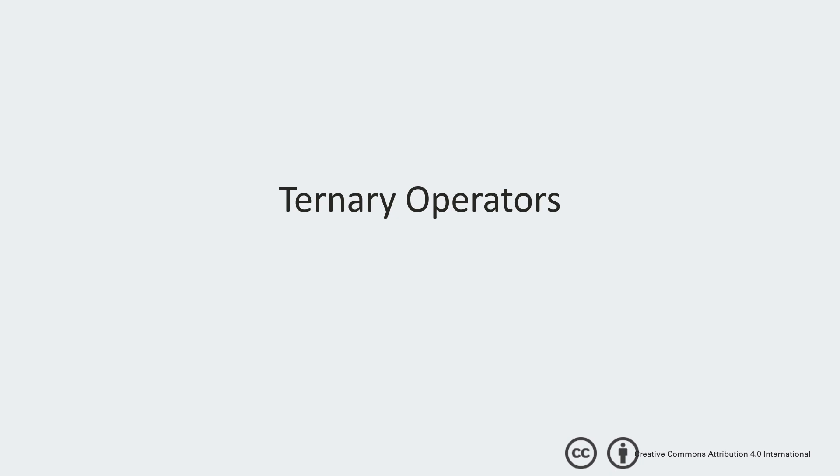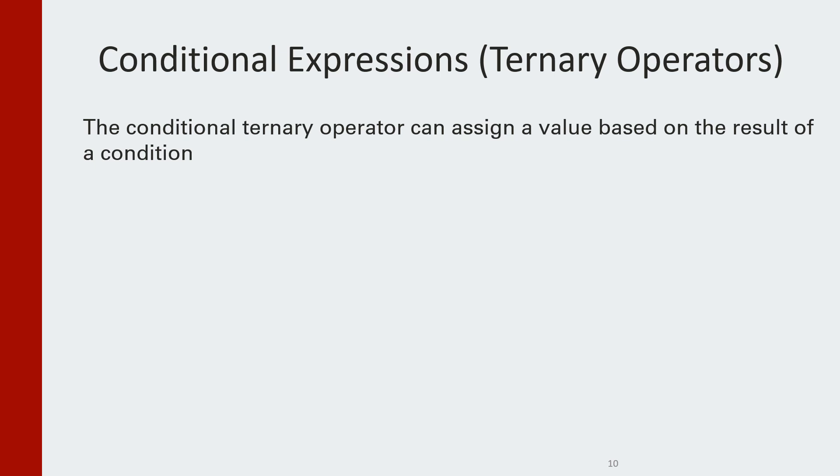Let's move on to talking about conditional expressions, also known as ternary operators. The conditional expression or conditional ternary operator can assign a value based on the result of a condition. It's basically just shorthand for if-else. The syntax for this is something like this, result is equal to some boolean condition question mark value one colon value two. So basically, we're going to check this some condition and if it's true then you're going to have result be equal to value one and if it's false it will be equal to value two.